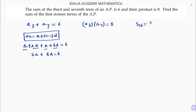Taking 2 as common from 2a + 8d = 6 gives 2(a + 4d) = 6, so a + 4d = 3.